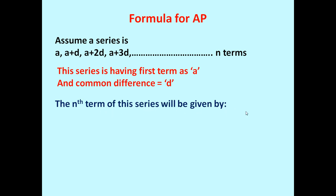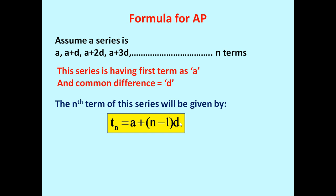The nth term of this series is given by: tn equals a plus (n minus 1) into d. Here tn is the nth term, a is the first term, n is the number of terms, and d is the common difference. For example, if there are 10 terms and we want to determine the 10th term, we put t10 equals a plus (10 minus 1) into d, which gives a plus 9d as the 10th term.